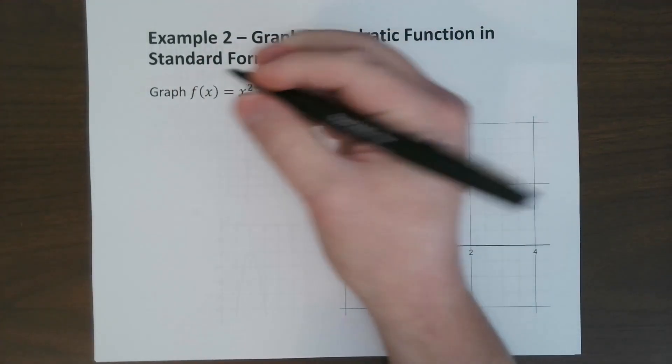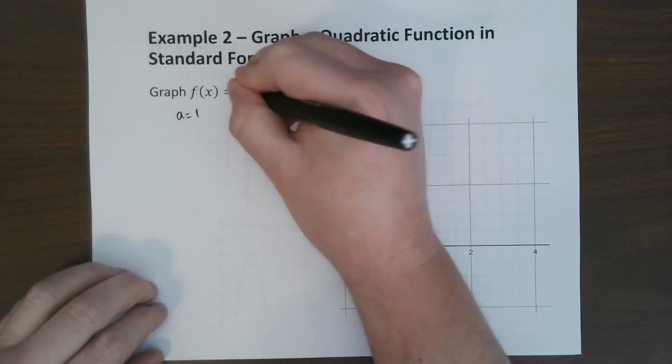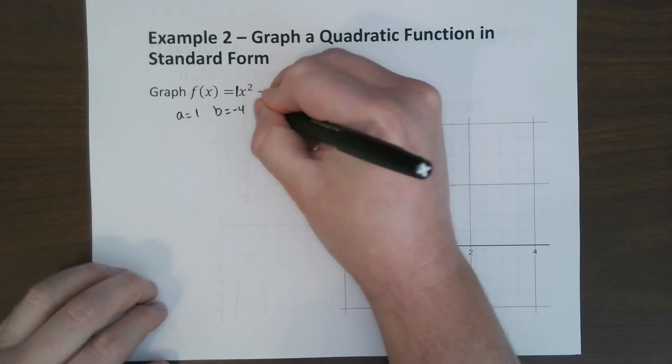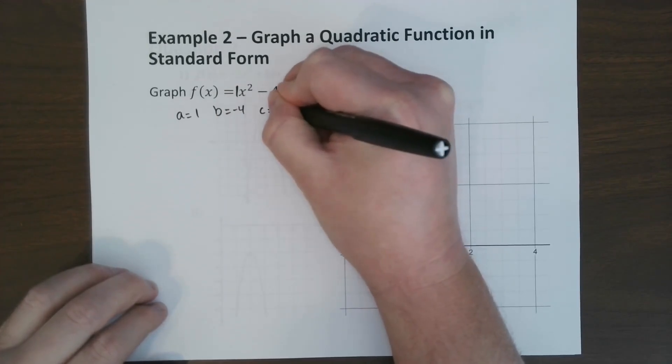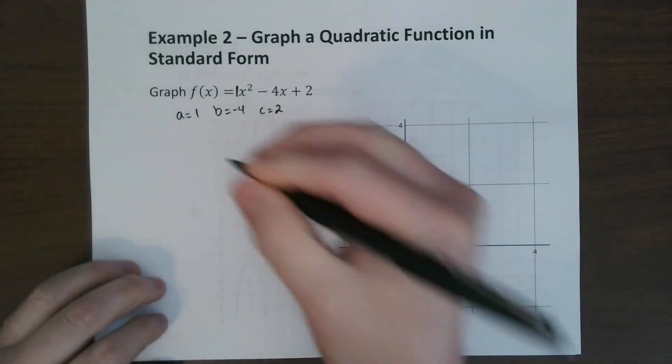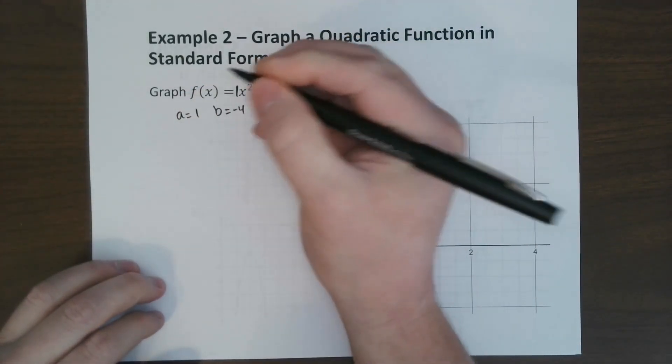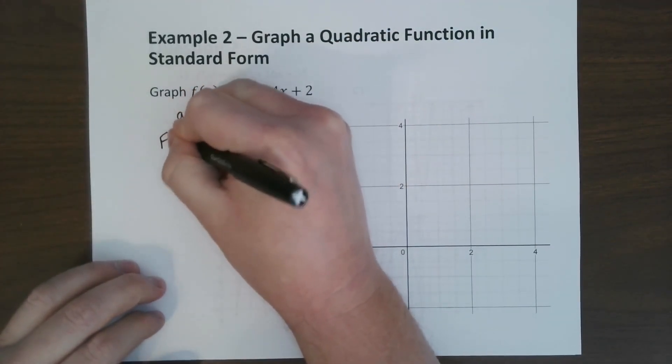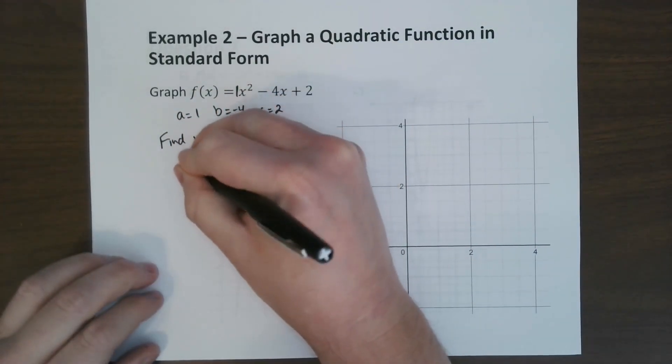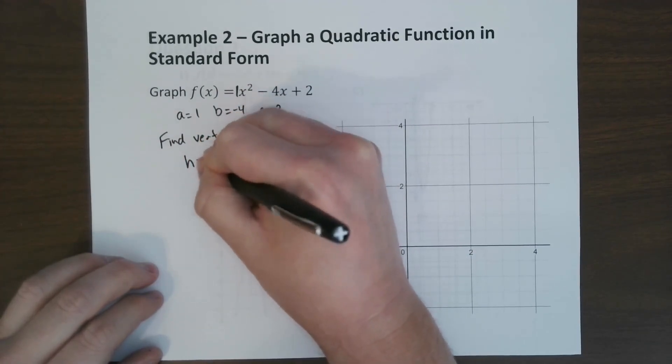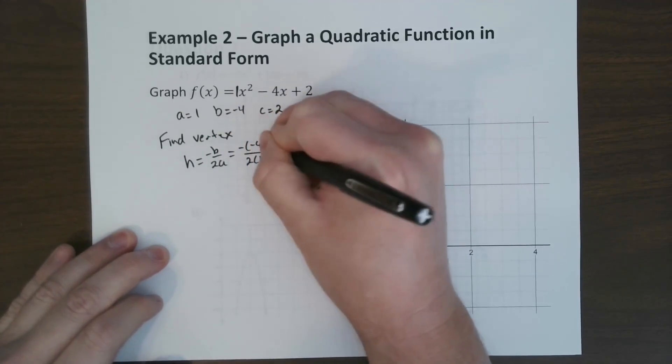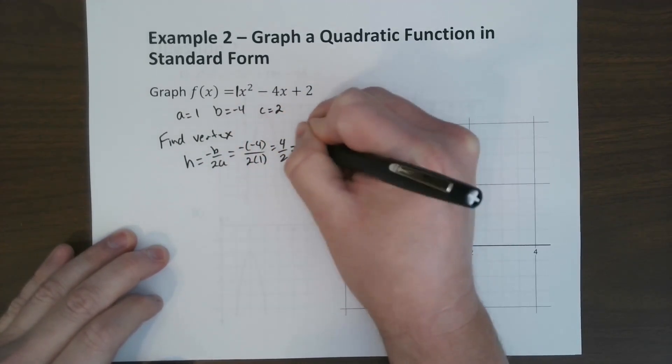So first to find the vertex, we find a, which is 1, because there's a 1 right here. We find b, which is negative 4. We find c, which is 2. And I'm going to talk more about c in a minute. c has actually a very special thing about it. So to find the vertex, that's what we're going to do first. We just plug in the equation. h equals negative b over 2a. So negative negative 4 over 2 times 1, which would be 4 over 2, which is 2.